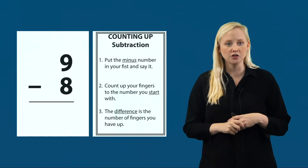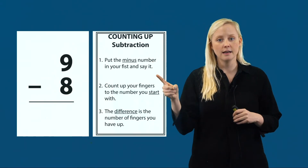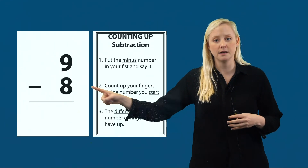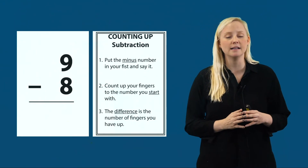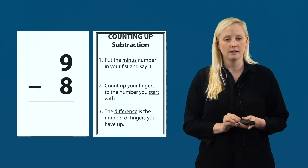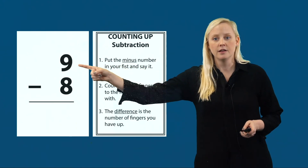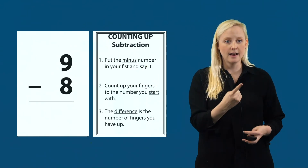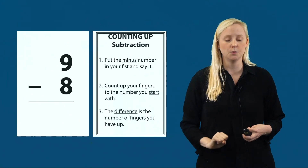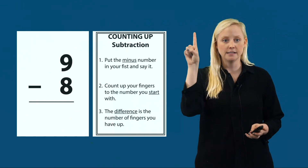Let's try another counting up subtraction problem. Here our problem says nine minus eight. I'm going to follow my three counting up subtraction steps. Eight is the minus number because it falls directly after the minus sign. I put eight in my fist: eight. Then I count up to the number I start with, which is nine: eight, nine. The difference is the number of fingers I have up — one. Our difference is one. Fluently: eight, nine. My difference is one.